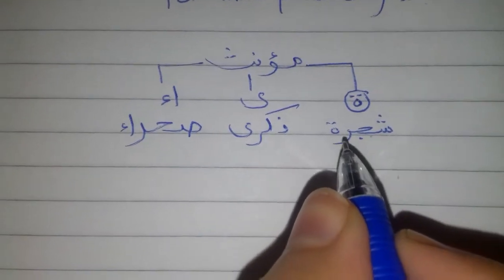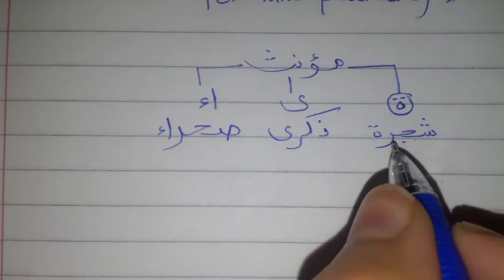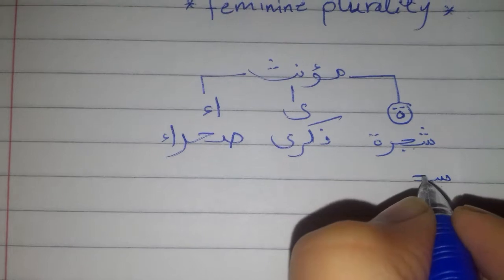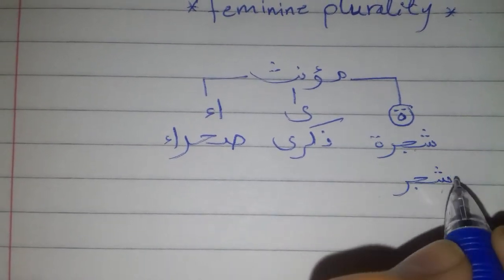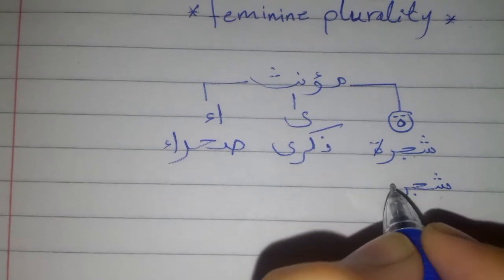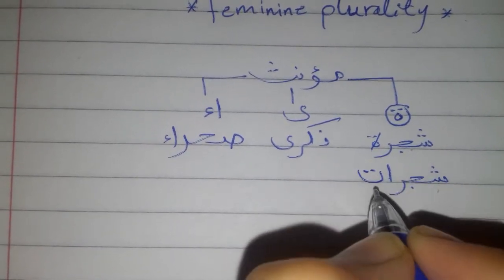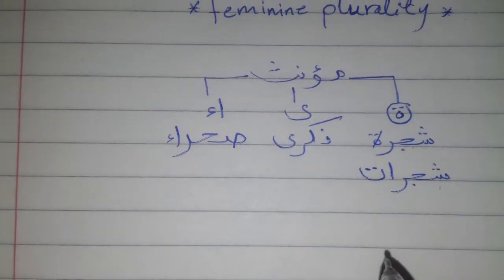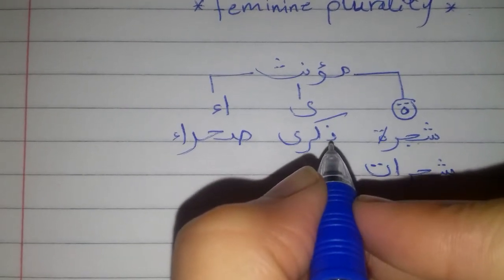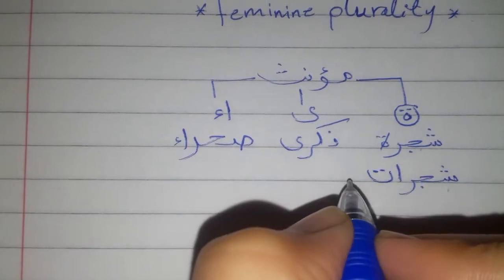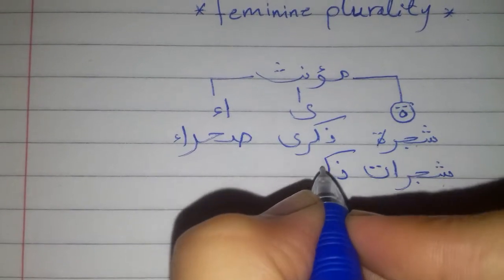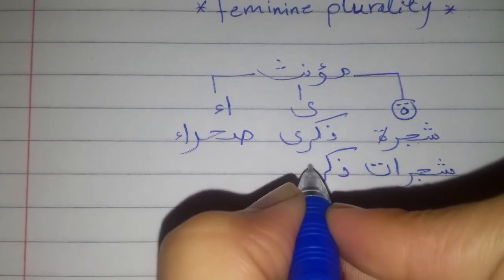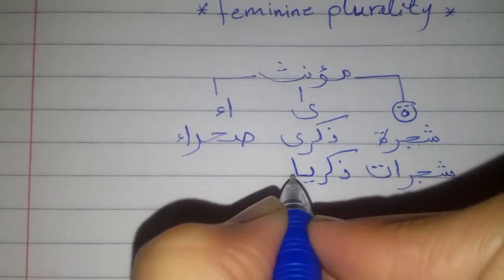So how do we form the plural from these singular nouns? For shajara, you write shajara, remove the ta', and add alif ta' — but this is the open ta' — so it becomes shajarat. For zikra, it becomes zikrayat: you change the alif al-maqsura into ya' and then add alif ta'.